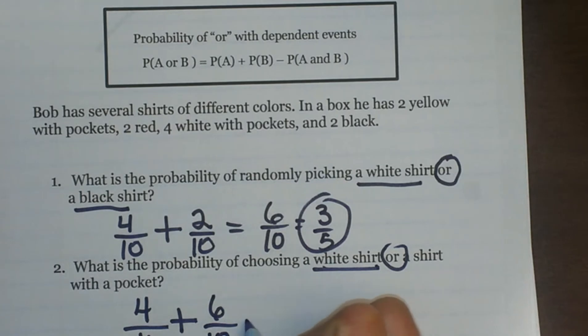But I have some overlap. How many are in both groups, are both white and have pockets? Well white and have pockets, that accounts for four tenths of them. So I have to subtract off that overlap.